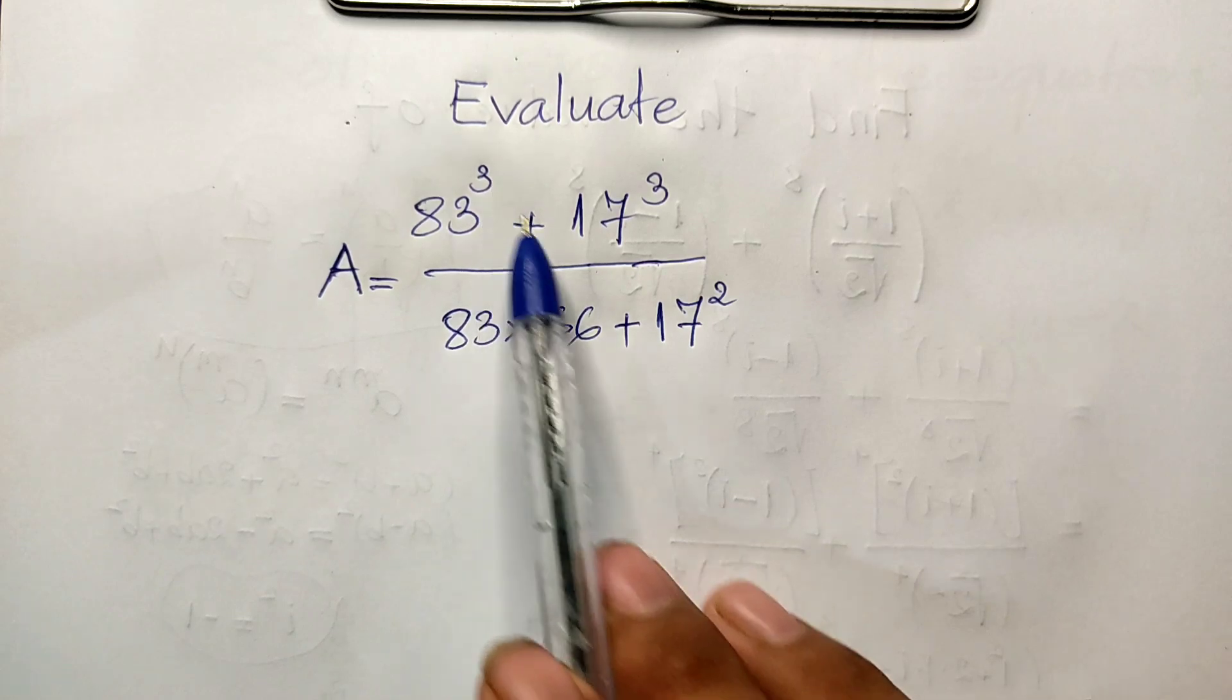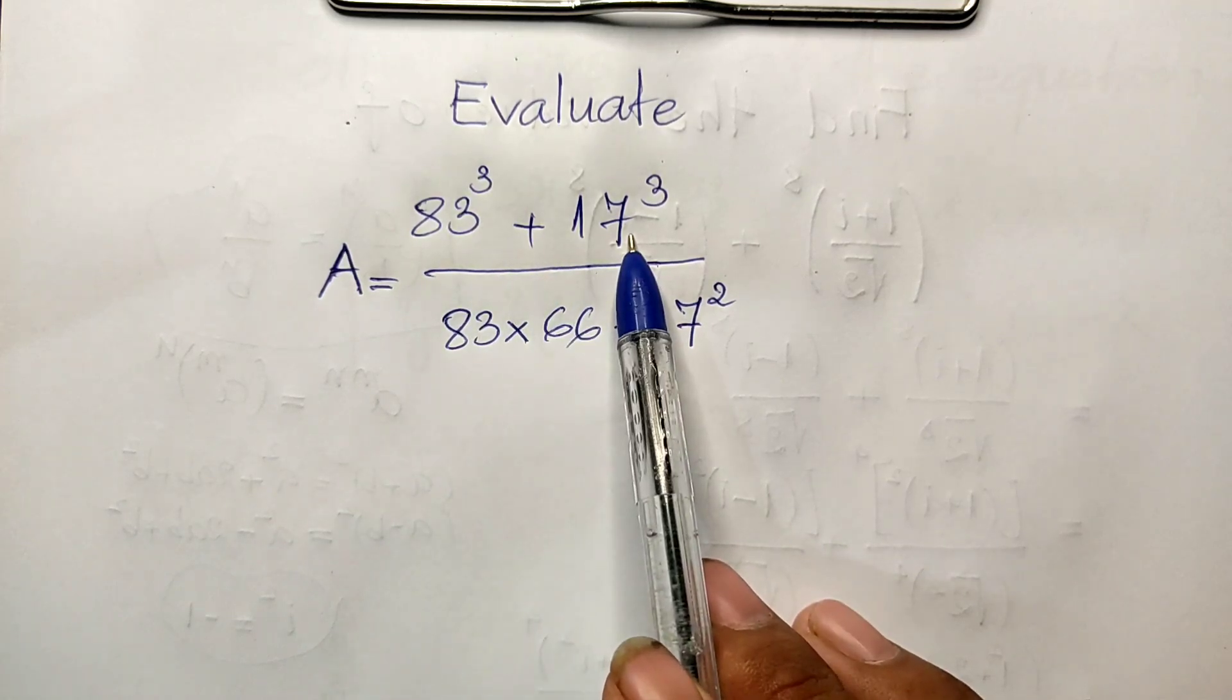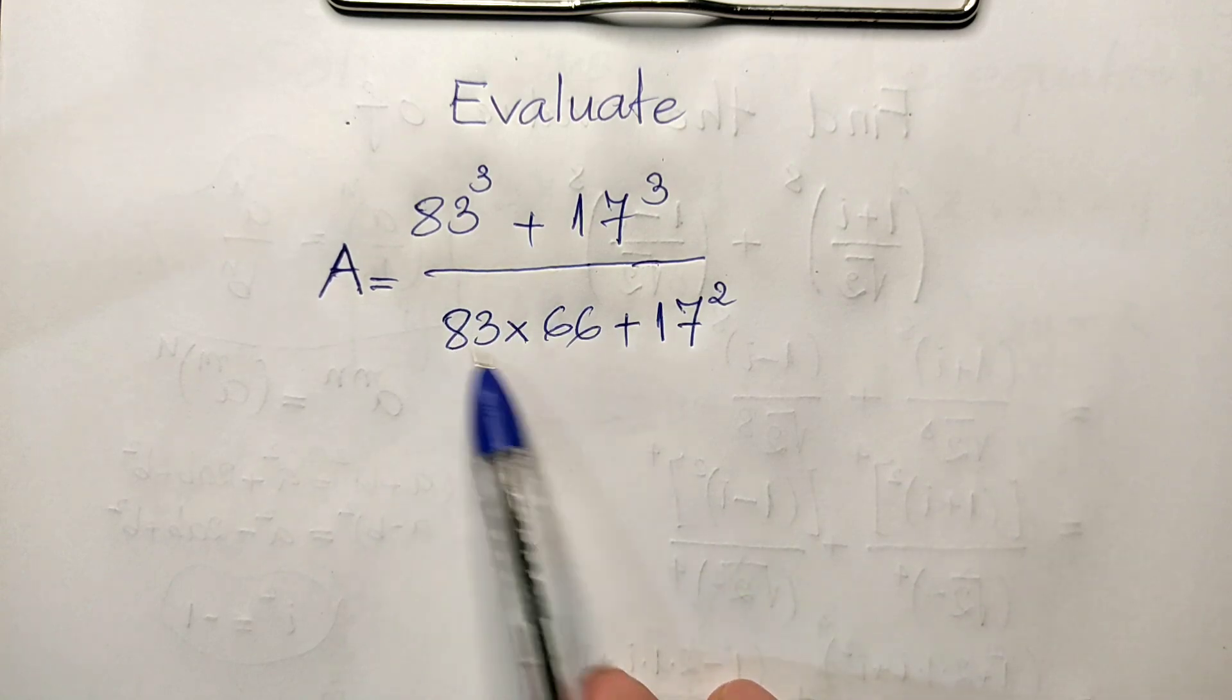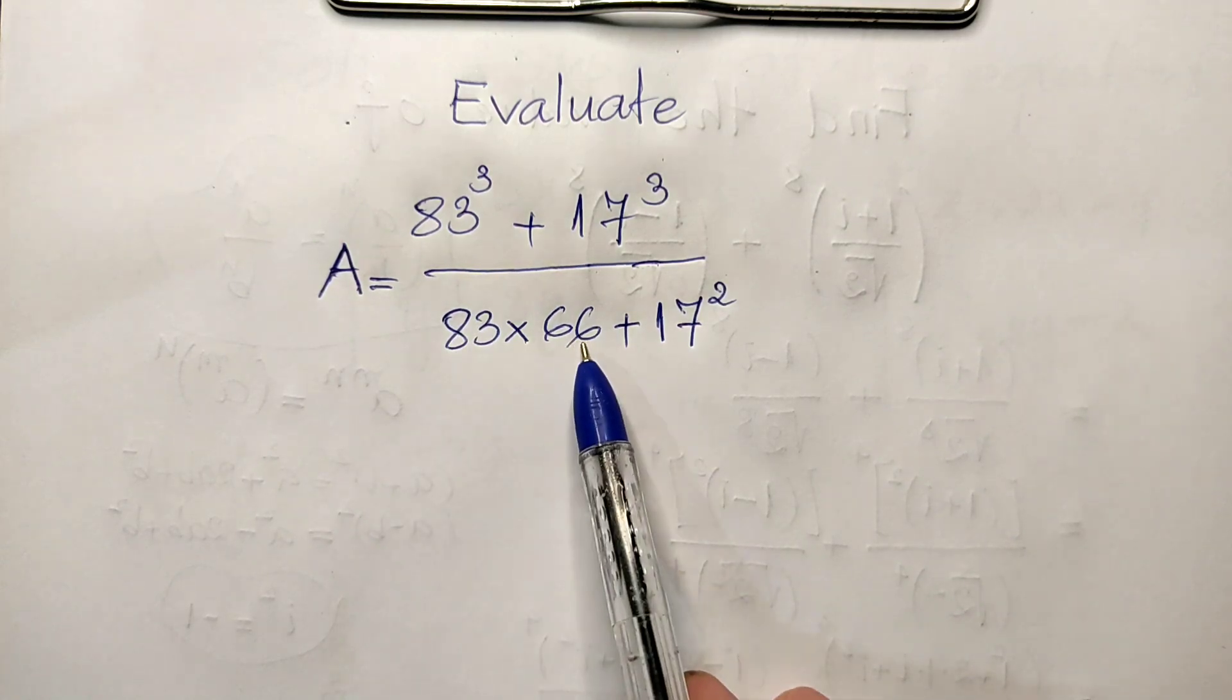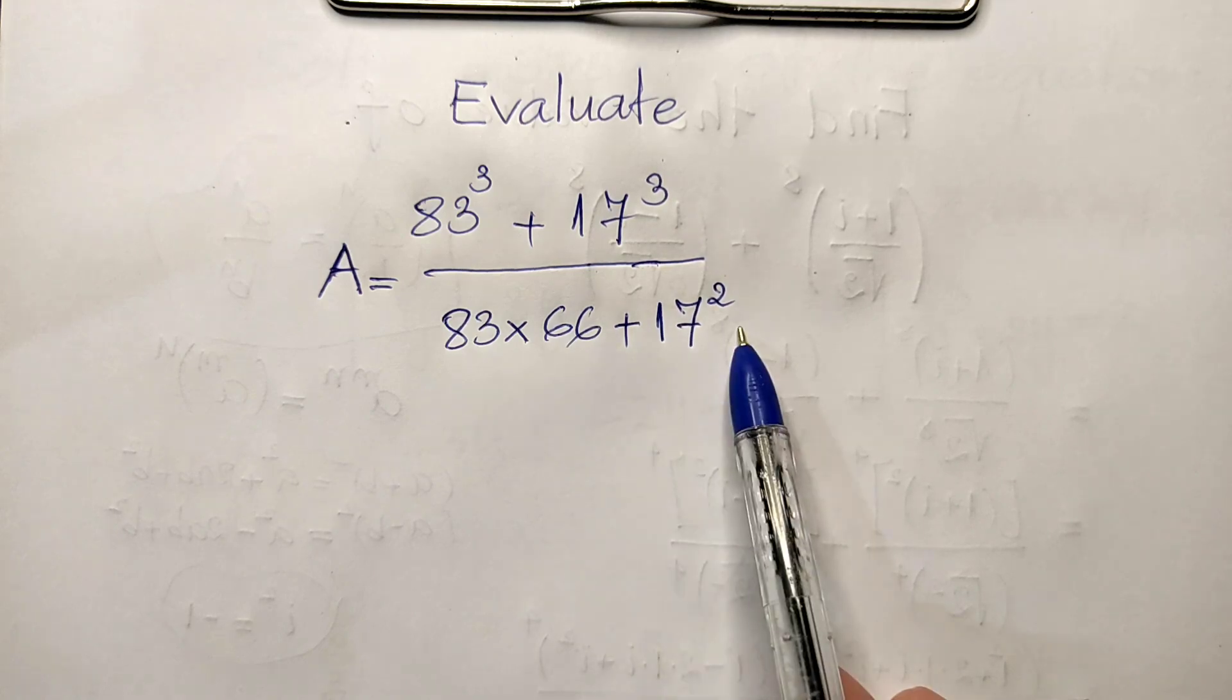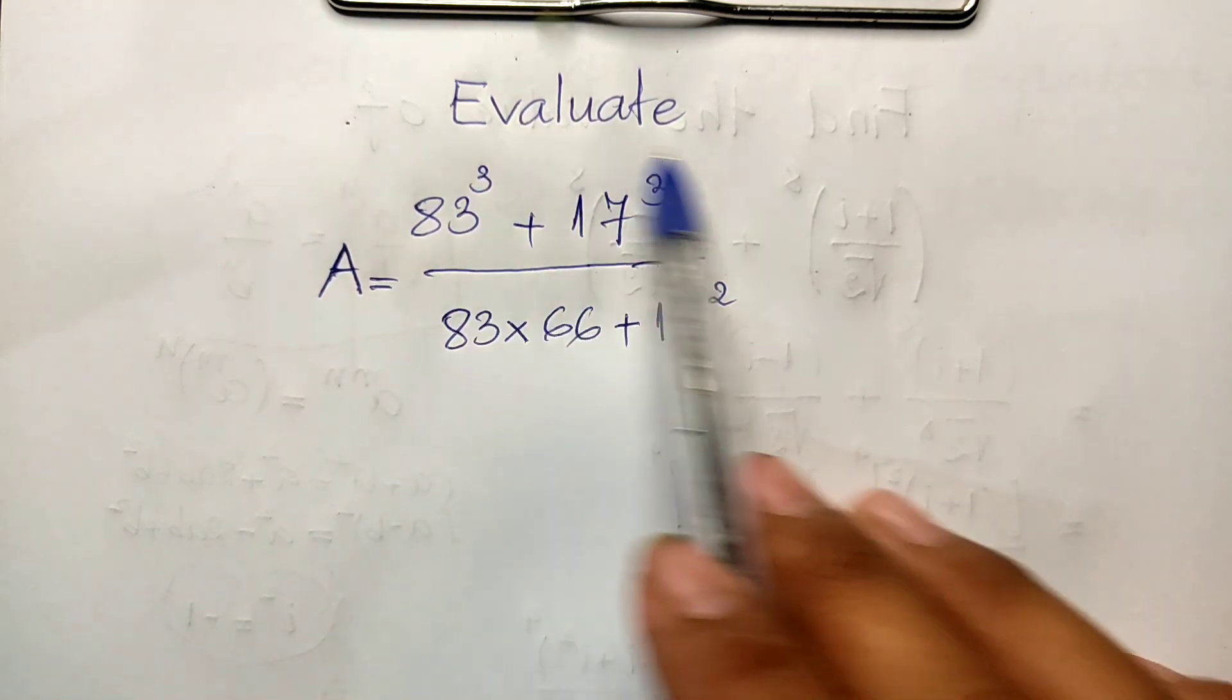The numerator is 83 to the power of 3 plus 17 to the power of 3, divided by 83 multiplied by 66 plus 17 squared. Do you know how to evaluate this expression?